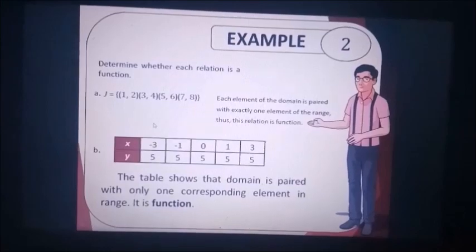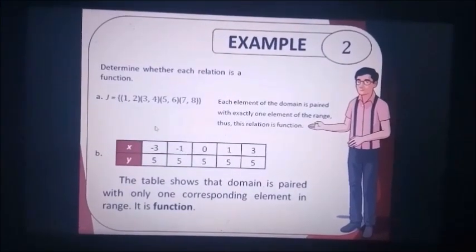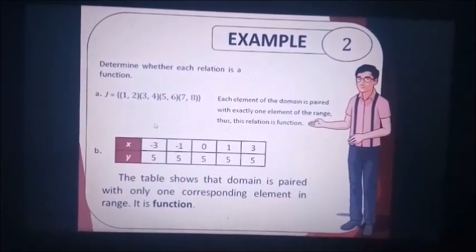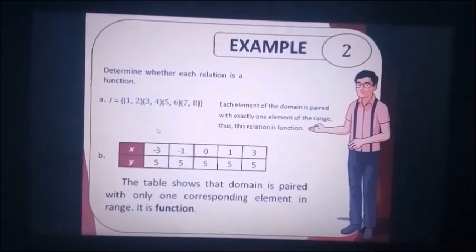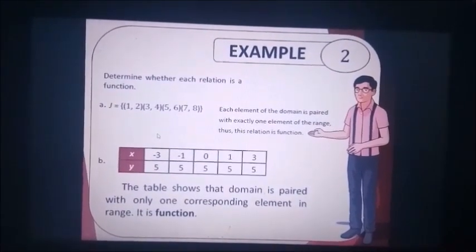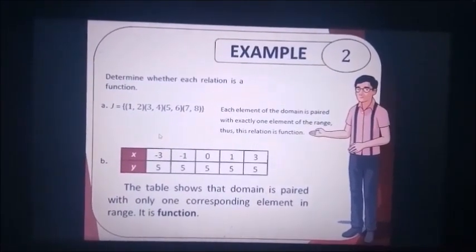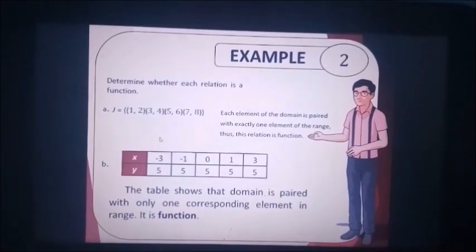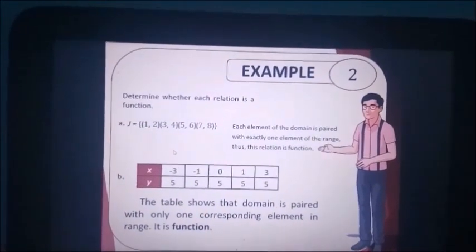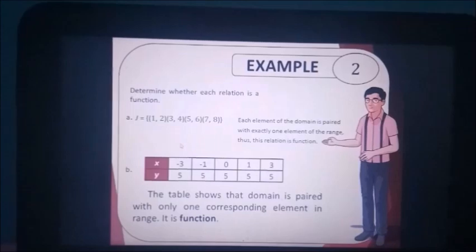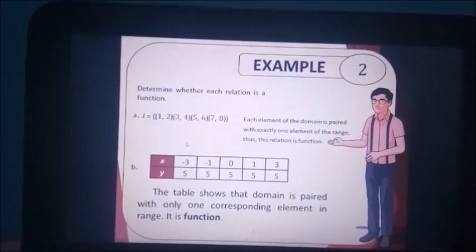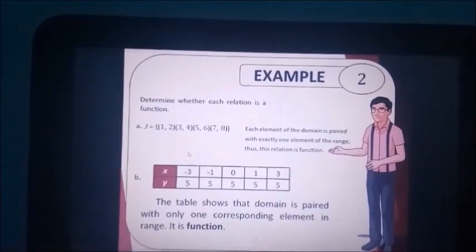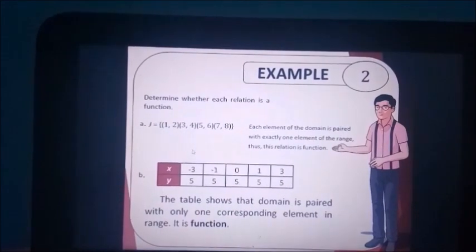Determine whether each relation is a function. In letter A: 1, 2, 3, 4, 5, 6, 7, 8. So it is a function. Each element of a domain is paired with exactly one element of the range. Thus, this relation is a function.